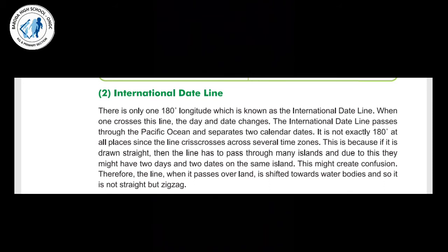The international date line is the 180 degree longitude. When one crosses this international date line, the day and date both change. The international date line passes through the Pacific Ocean and separates the two calendar dates. It crosses over the Pacific Ocean and in this way shifts the dates.